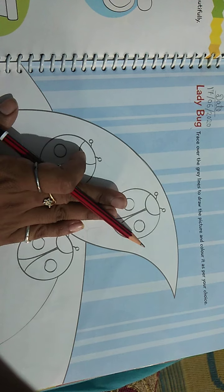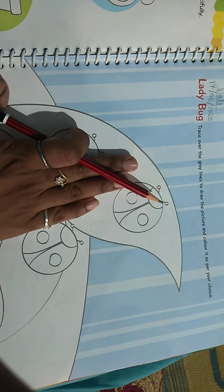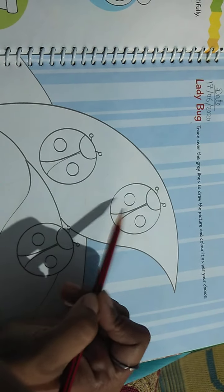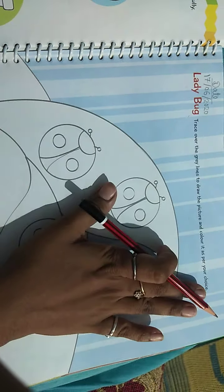Then after what it said, draw the picture and color it as per your choice. According to your choice, draw the picture and color it. It is of your choice, you need to color it by your choice.